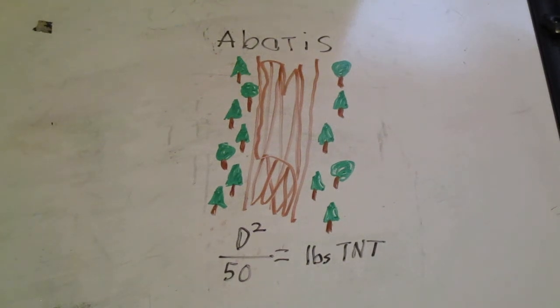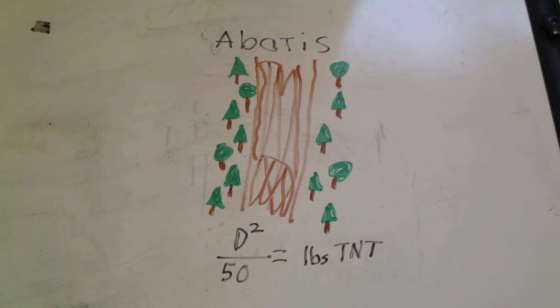In this video I'm going to give you another engineer task, and that's how to emplace an abatis. People get confused by the spelling and call it an abatisse, but abatis is the correct pronunciation. This is a log obstacle for blocking roadways that can stop tanks.